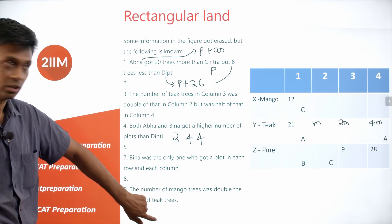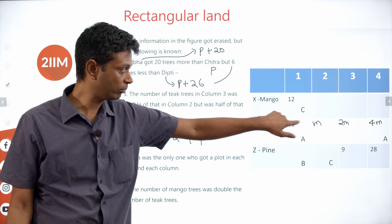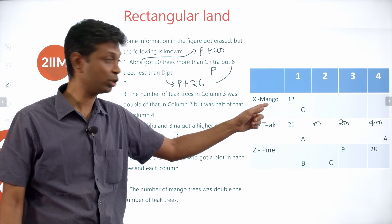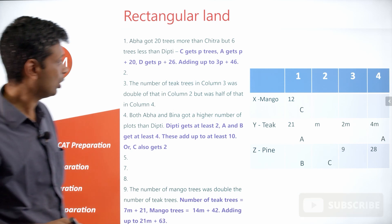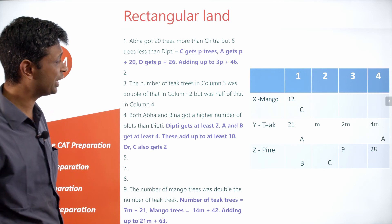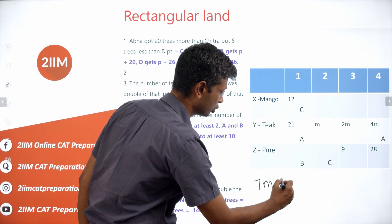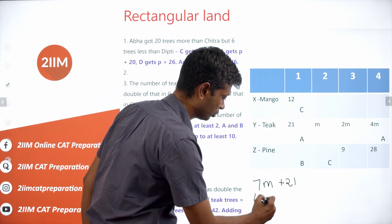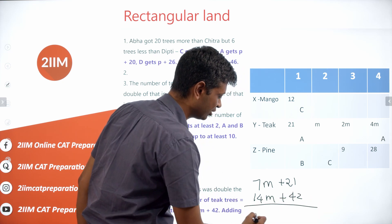Bina was the only one who got a plot in each row and each column — we'll come to that. The number of mango trees was double the number of teak trees. Total teak trees using M: the known cell is 21, plus M plus 2M plus 4M, giving 7M plus 21. So total mango trees is 14M plus 42.